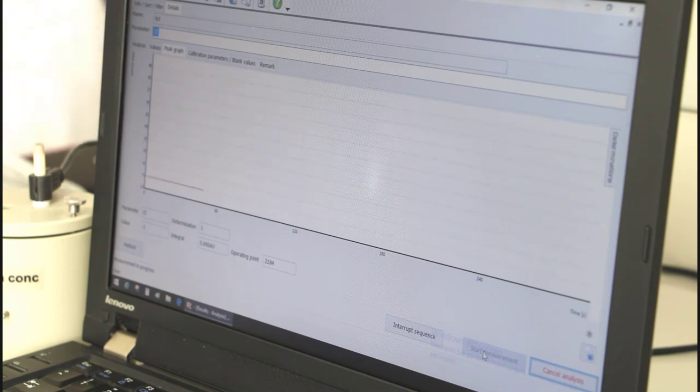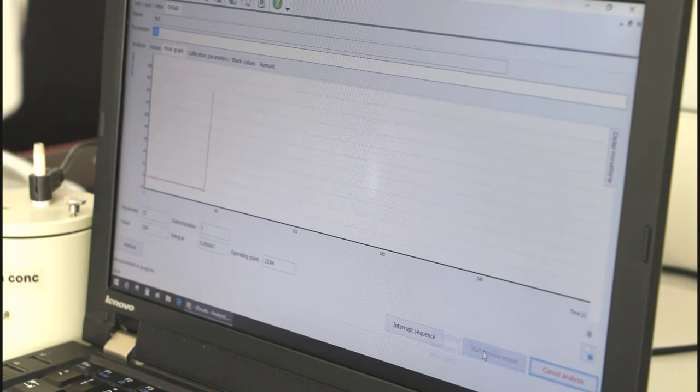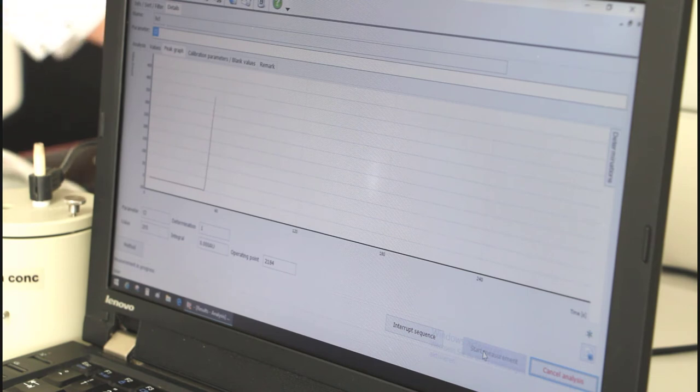Due to the nature of the coulometry as an absolute method, no calibration has to be applied. The measured detector value is directly related to the chlorine content.